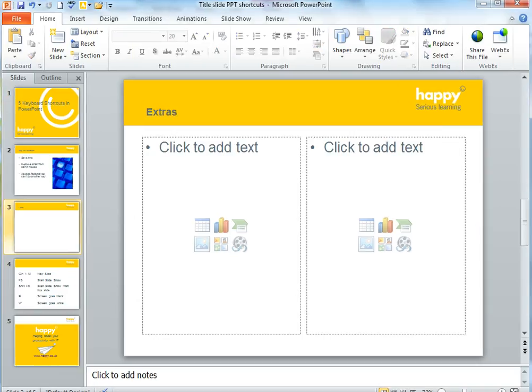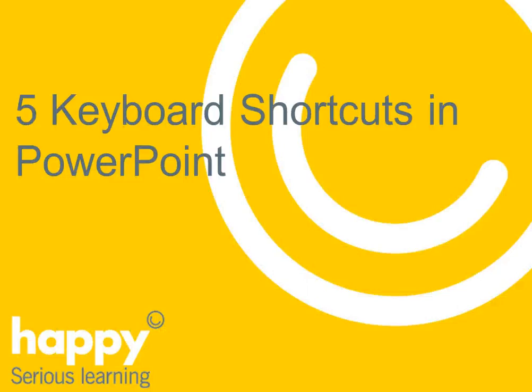The rest of our shortcuts today are about delivering your presentation. To run a presentation in slideshow view, press F5. Don't forget those function keys are right at the top of your keyboard, so F5 to run your presentation. This option always takes you to the beginning, to the first slide.